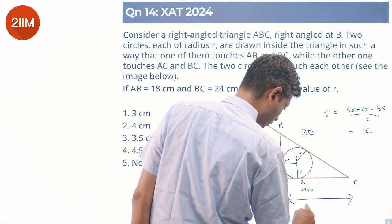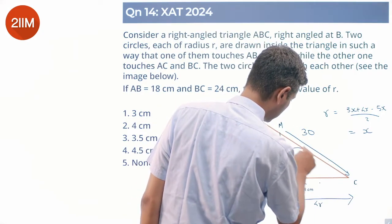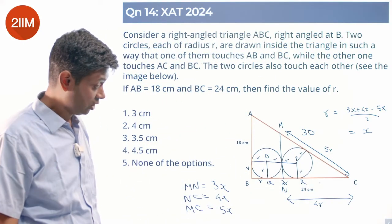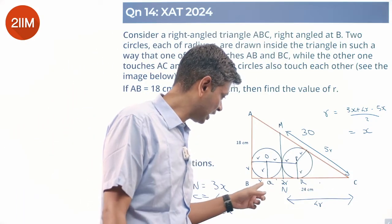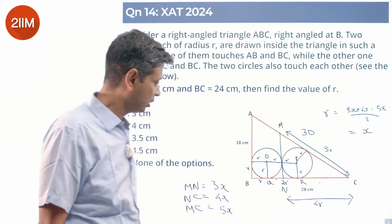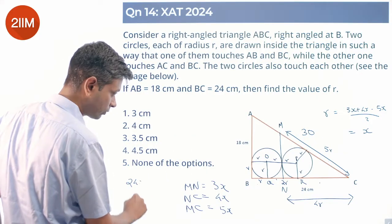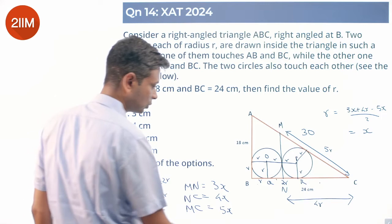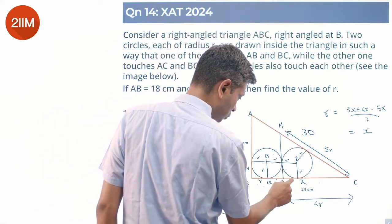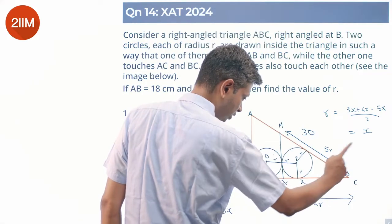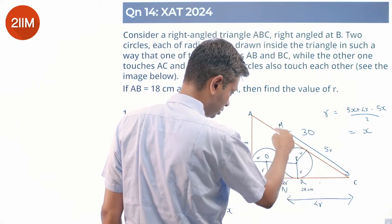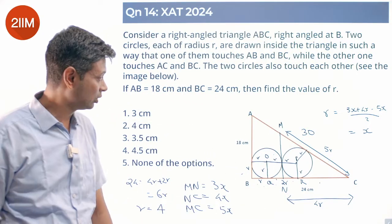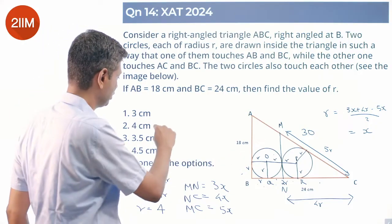Since R = x, the sides of triangle MNC are 4R, 4R, and 5R... Now looking at BC = 24: this equals 4x plus 2R, which is 4R plus 2R, equal to 6R. Therefore R = 24 / 6 = 4. The radius R is 4 centimeters.